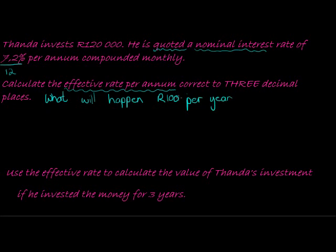All we need to do is use this information in our formula: F = P(1+i)^n, where my future value is unknown, my present value is 100 rand. I don't care about the 120,000 to calculate the effective rate per annum - I'm just asking what's happening to 100 rand in one year.